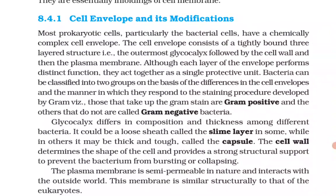Mesosomes are essentially infoldings of the cell membrane. Cell envelope and its modifications: most prokaryotic cells, particularly bacterial cells, have a chemically complex cell envelope. The cell envelope consists of a tightly bound three-layered structure — the outermost glycocalyx, followed by the cell wall, and then the plasma membrane. Although each layer performs distinct functions, they act together as a single protective unit. Bacteria can be classified into two groups based on differences in the cell envelope and how they respond to Gram staining — Gram positive and Gram negative.